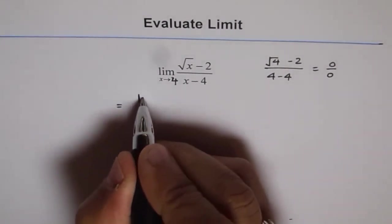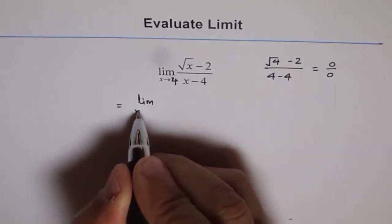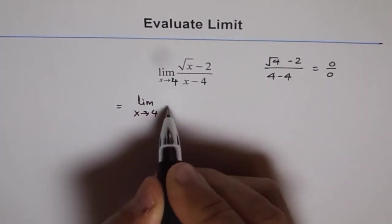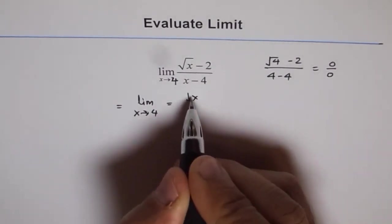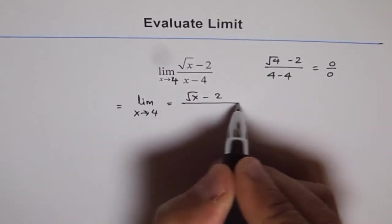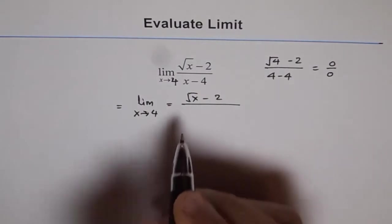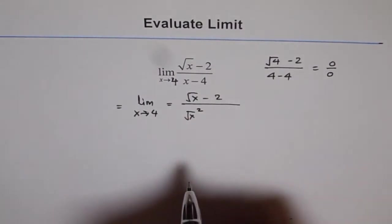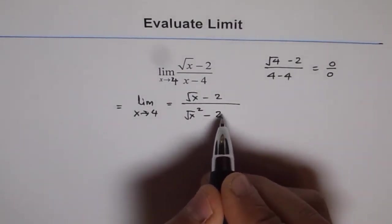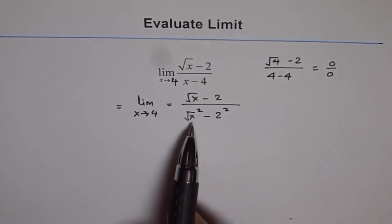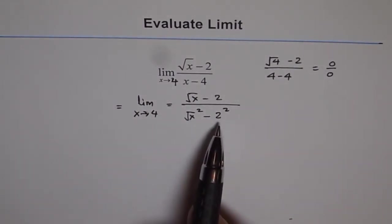You see, limit of function when x approaches 4. So square root x minus 2 divided by, think x as square root x square and 4 is 2 square. So now you see, denominator is difference of squares.